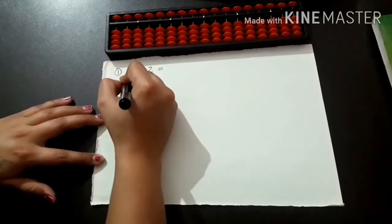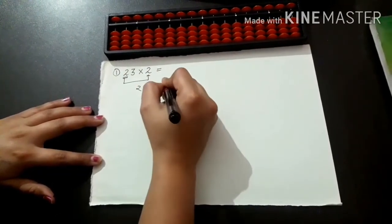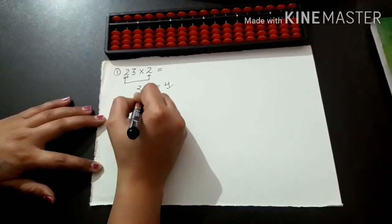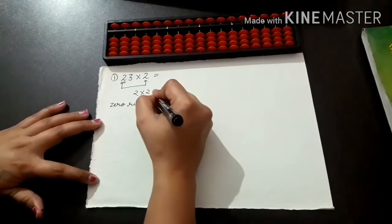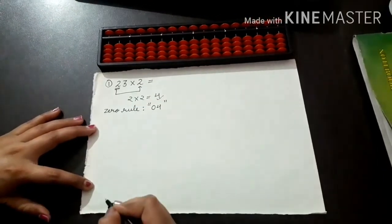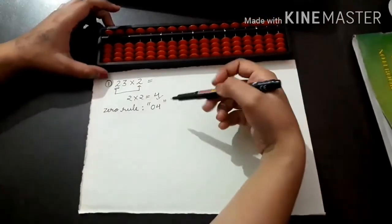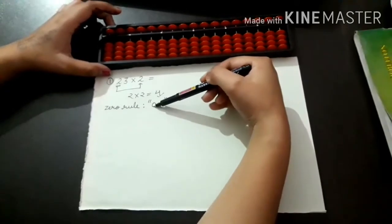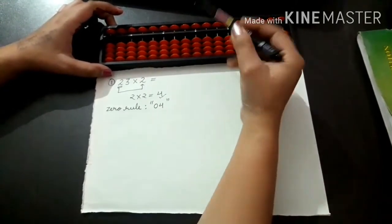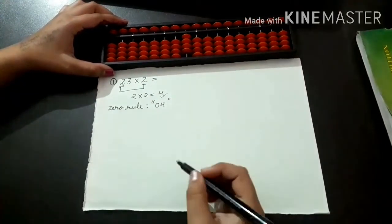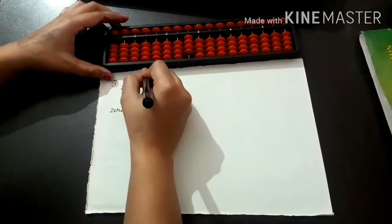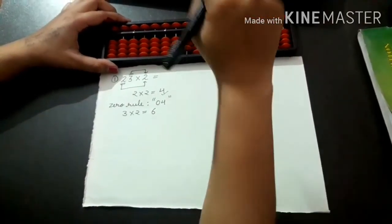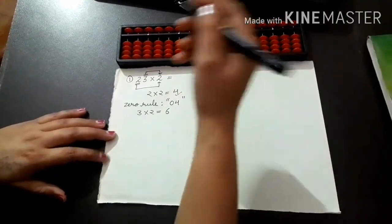First, multiply the first digit with 2: 2 into 2 equals 4. Since 4 is a single digit number, we apply the zero rule — we write 04. In the hundreds rod the first number is zero, so nothing is done there. For 4 in the tens rod, we put up 4 beads. Next, multiply 3 with 2: 3 into 2 equals 6. Put 6 in the units rod. The answer is 46.